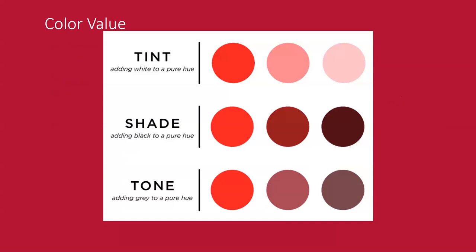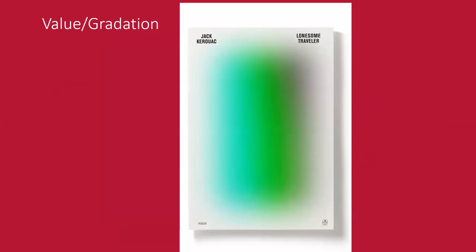With color value there are also tint, shades, and tones — tint is adding white to a hue, shade is adding black, and tone is adding gray. Working with something like Adobe Illustrator, a lot of these palettes are already made for you, making the process easier. There's also gradation — you can work with different gradients and blend colors together, and working with digital tools makes this a breeze.